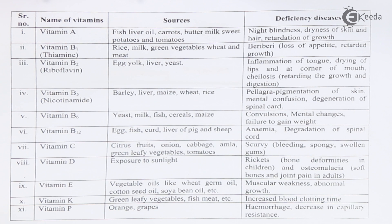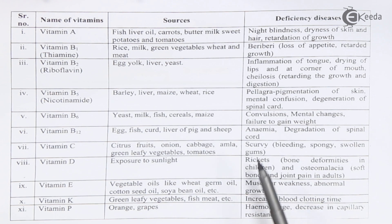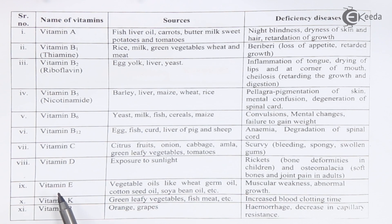Vitamin D's main source is exposure to sunlight. We already have pre-vitamins on our skin, and sunlight activates those vitamins so they can be absorbed by the bone. If Vitamin D is not present in sufficient quantity in our body, we can get rickets.